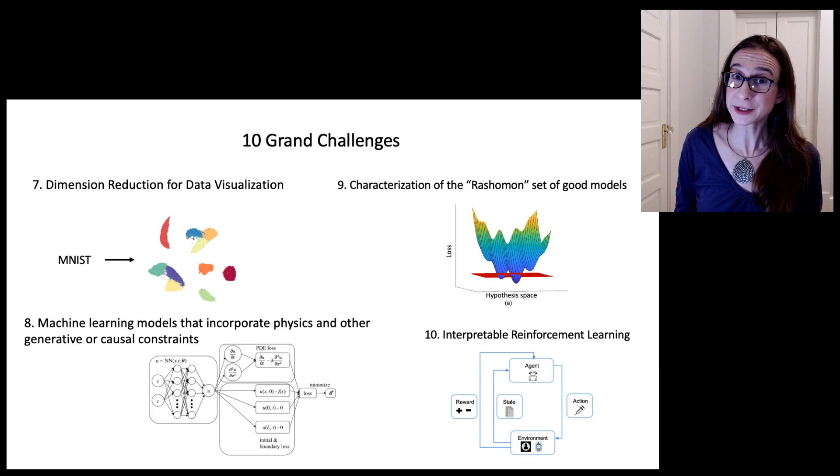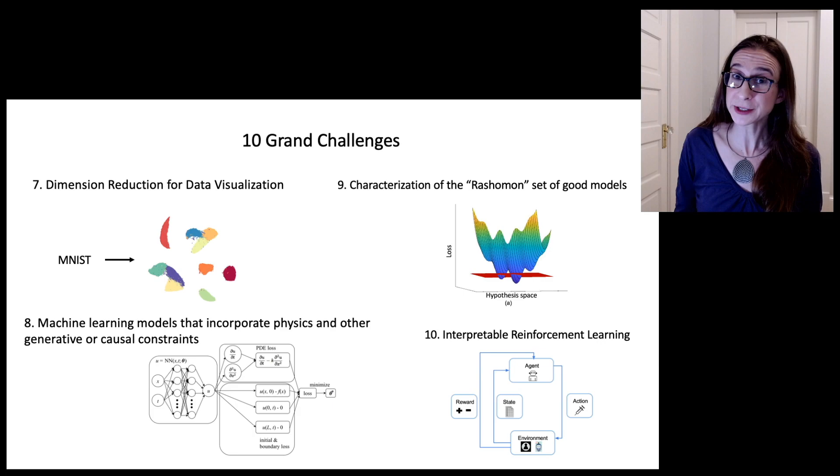And then the tenth one is interpretable reinforcement learning. So you'd like to know here how the agent makes its decisions. You want to know in an interpretable way what's the policy of the agent.